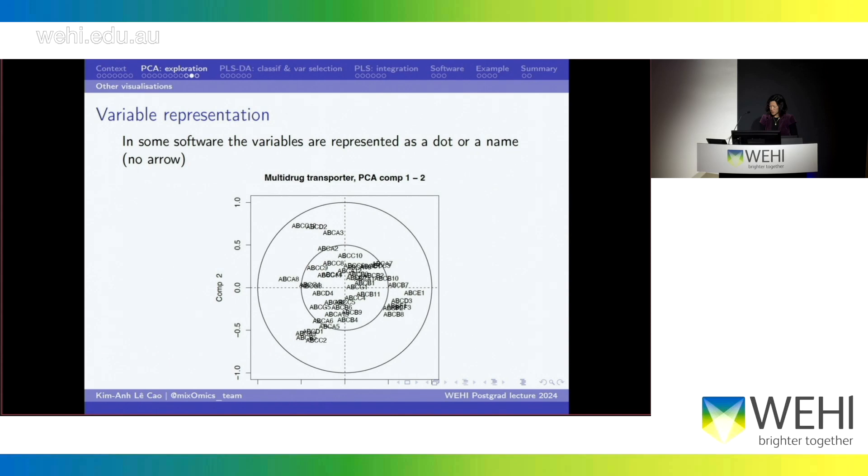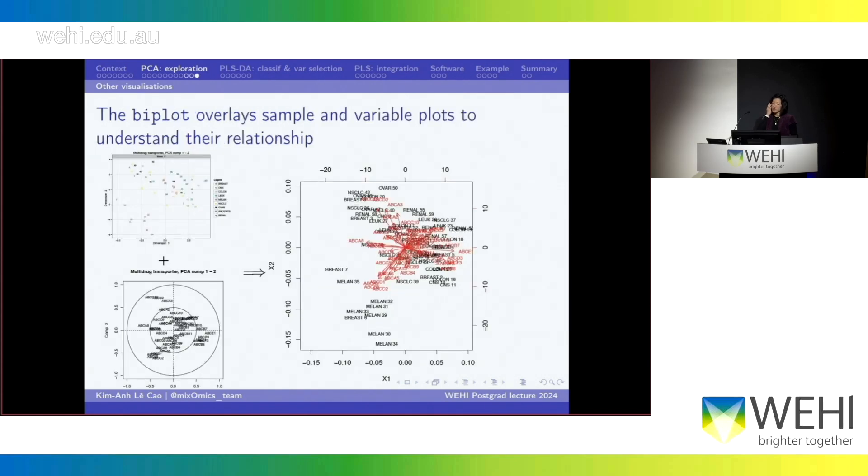And another plot that is probably not well known is the biplot. And basically, it combines a sample plot and the correlation circle plot that I showed you before. So, the sample plot, as I told you, tells us more about the samples, how similar they are together, what is the source of variation that explains why they're different. The correlation circle plot is going to tell us how correlated the variables are in that reduced space. And the biplot is going to overlay those two plots. So, you will have at the back, you have all your samples. And in the front, in red, you have your variables.